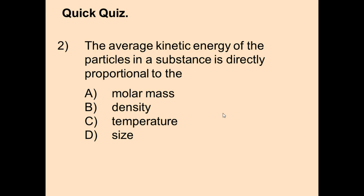Question 2: The average kinetic energy of particles in a substance is directly proportional to — A) molar mass, B) density, C) temperature, or D) size. The thermometer picture is a clue. Gas particles' speed is related to temperature: high temperature means fast-moving particles, low temperature means slow-moving particles. Always remember — temperature is energy in chemistry.